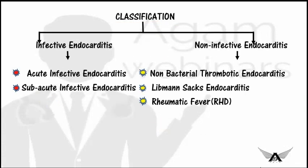Moving on to classification, there are two types: infective endocarditis and non-infective endocarditis. Infective endocarditis is further divided into acute and sub-acute infective endocarditis, classified based on onset of disease. Non-infective endocarditis is inflammation of the endocardium or heart valves not caused by a microorganism. There are three types: non-bacterial thrombotic endocarditis, Libman-Sacks endocarditis (seen in SLE), and rheumatic heart disease in the form of Verruca bodies.